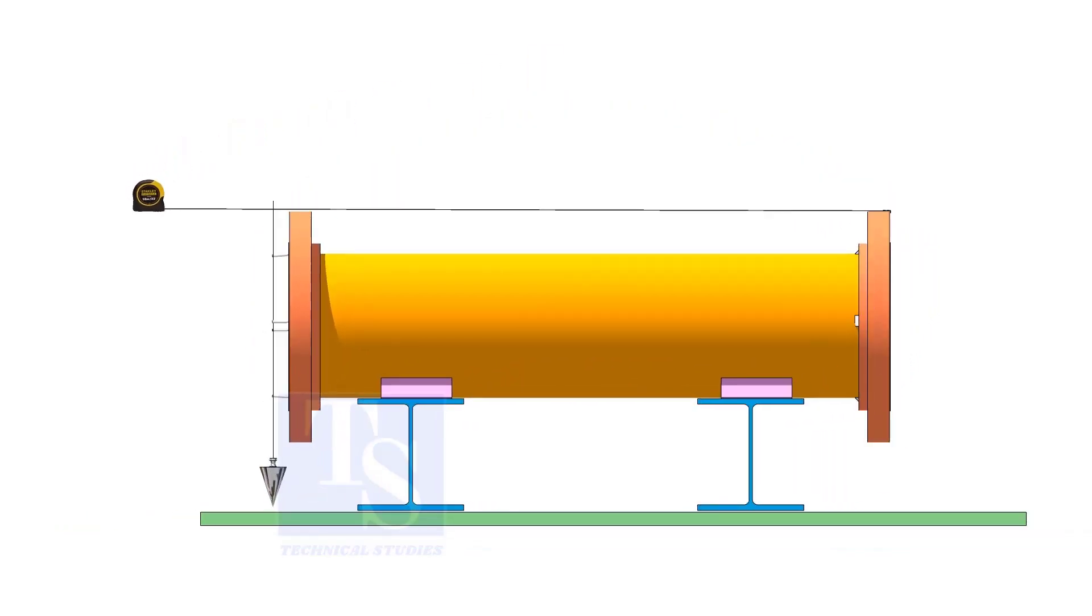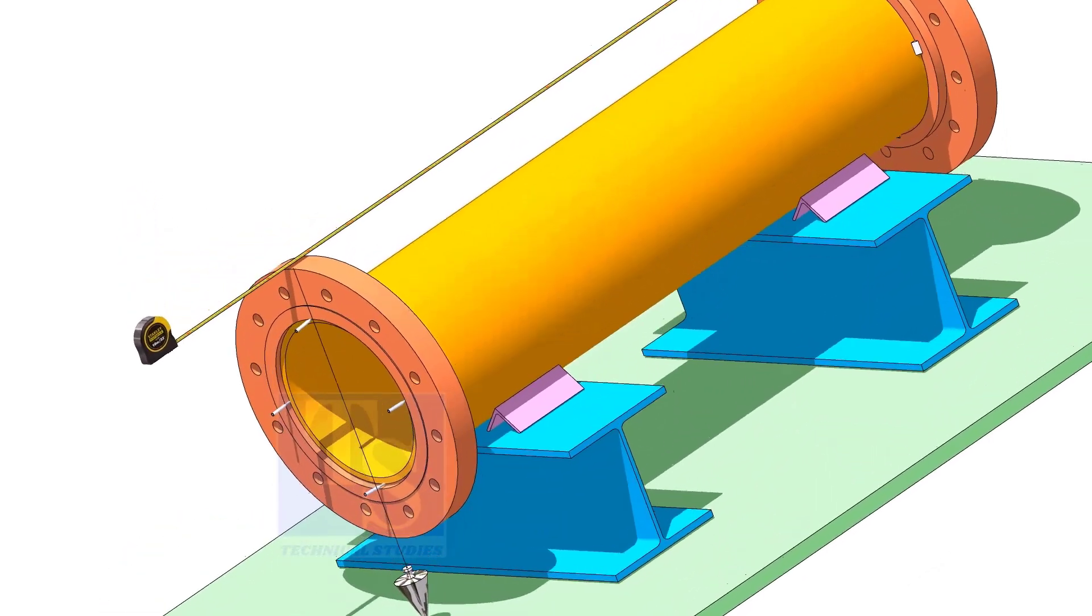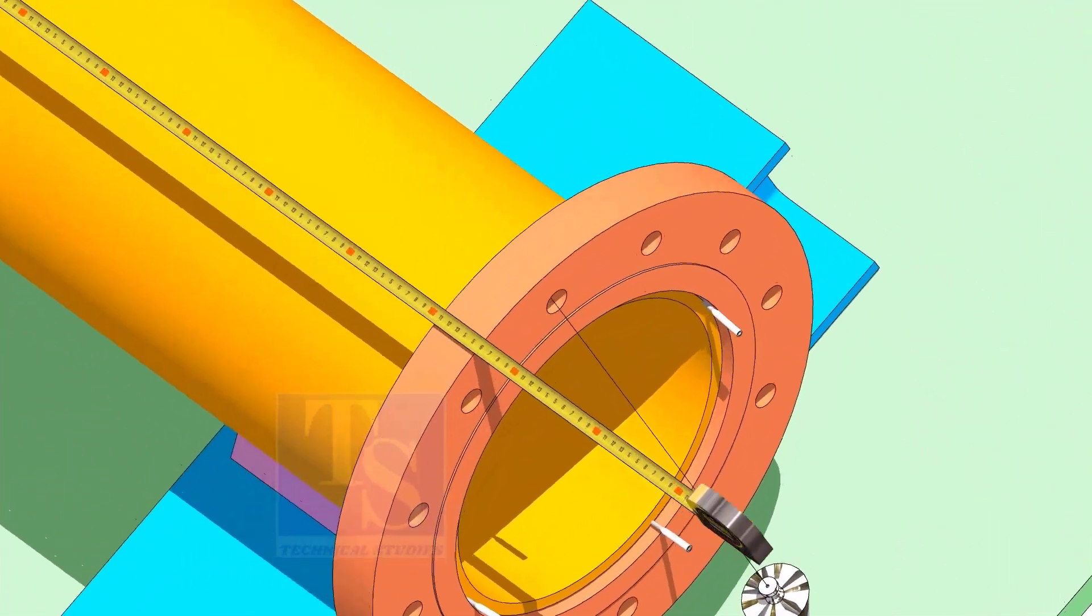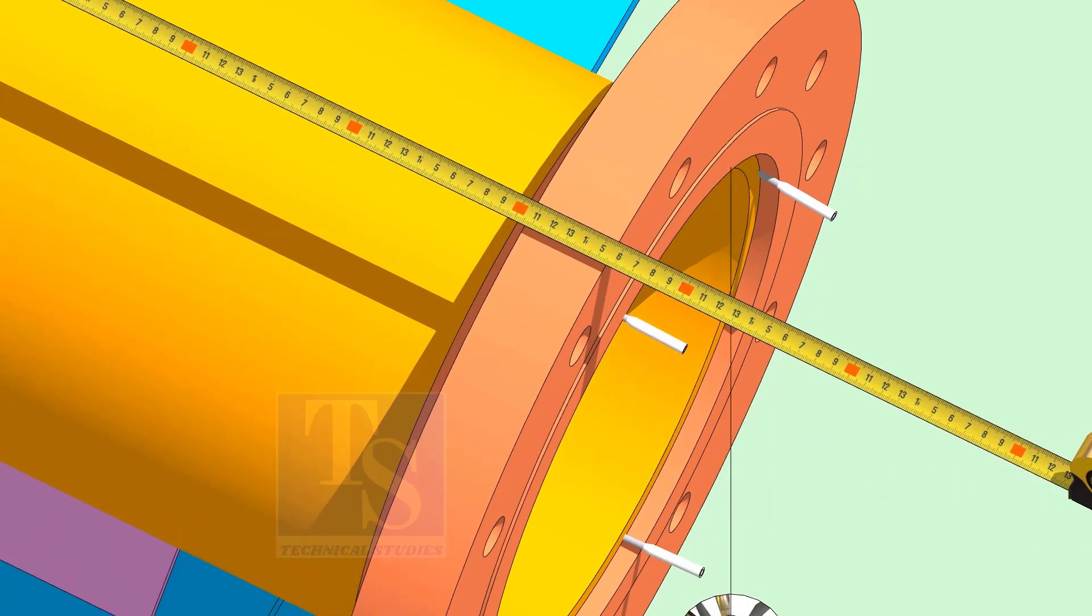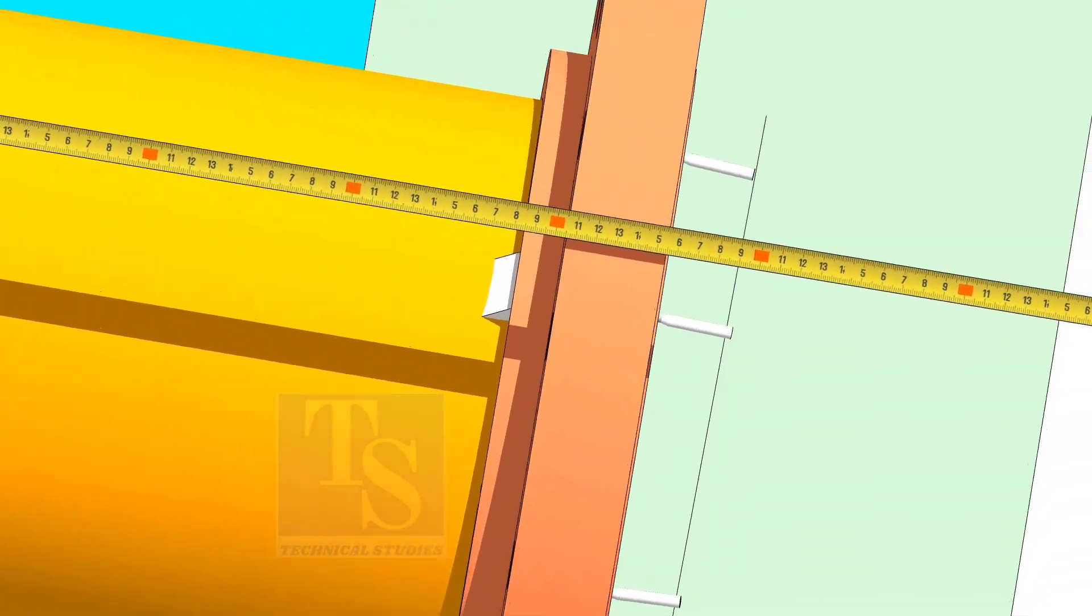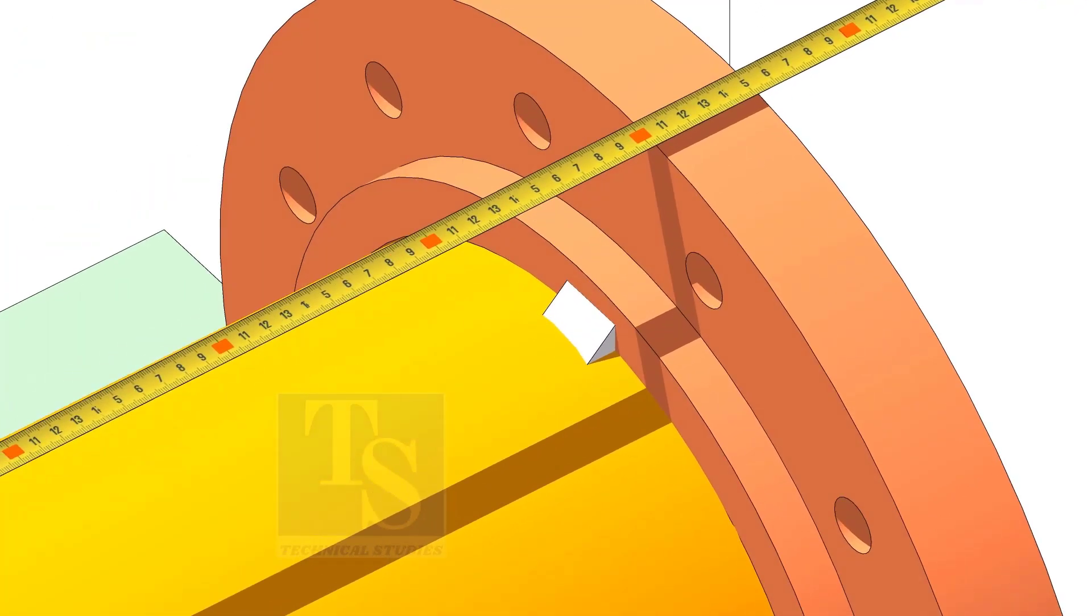Now, make sure the length of the pipe spool is as per the drawing. Take it to the surface and repeat the steps we have done on the first flange.